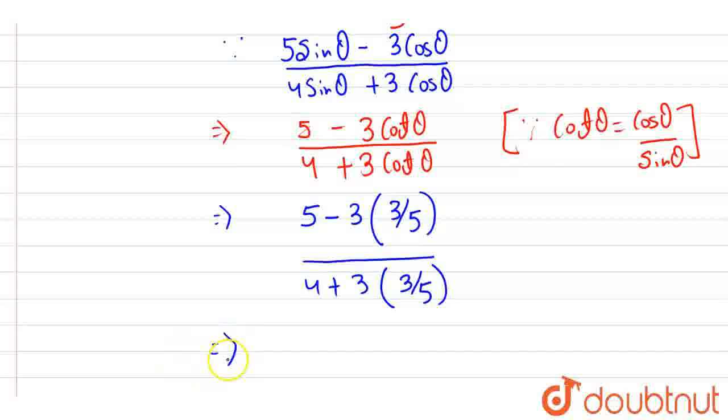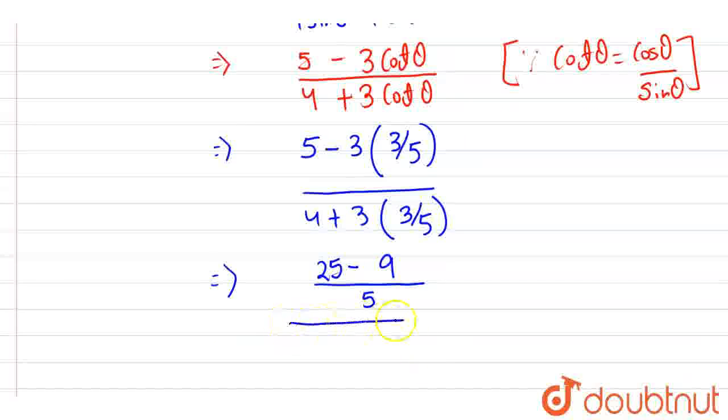Let's simplify this. Taking LCM of 5, the numerator becomes (5 × 5 - 3 × 3)/5 = (25 - 9)/5. Similarly, the denominator becomes (4 × 5 + 3 × 3)/5 = (20 + 9)/5.